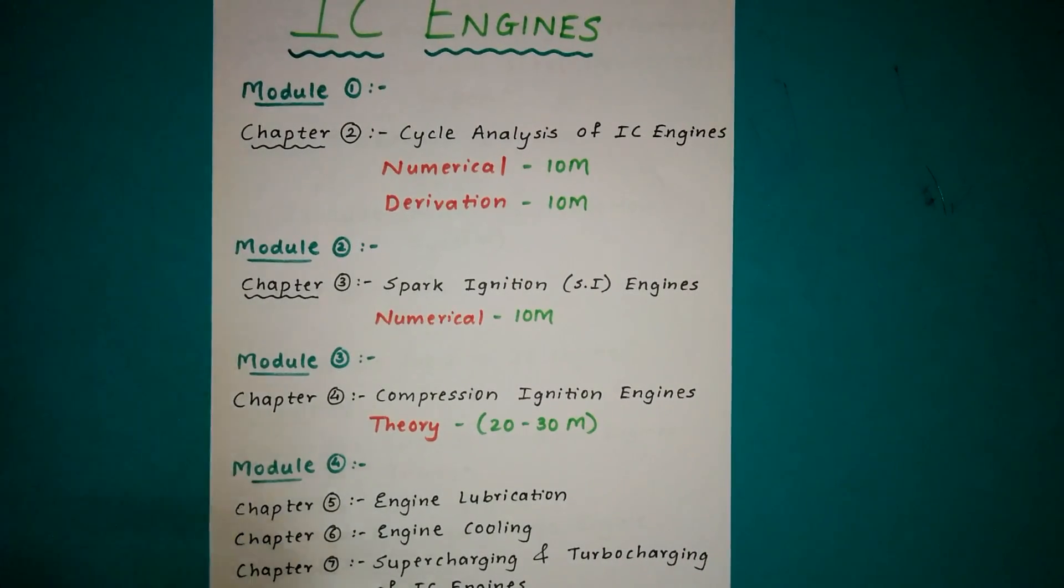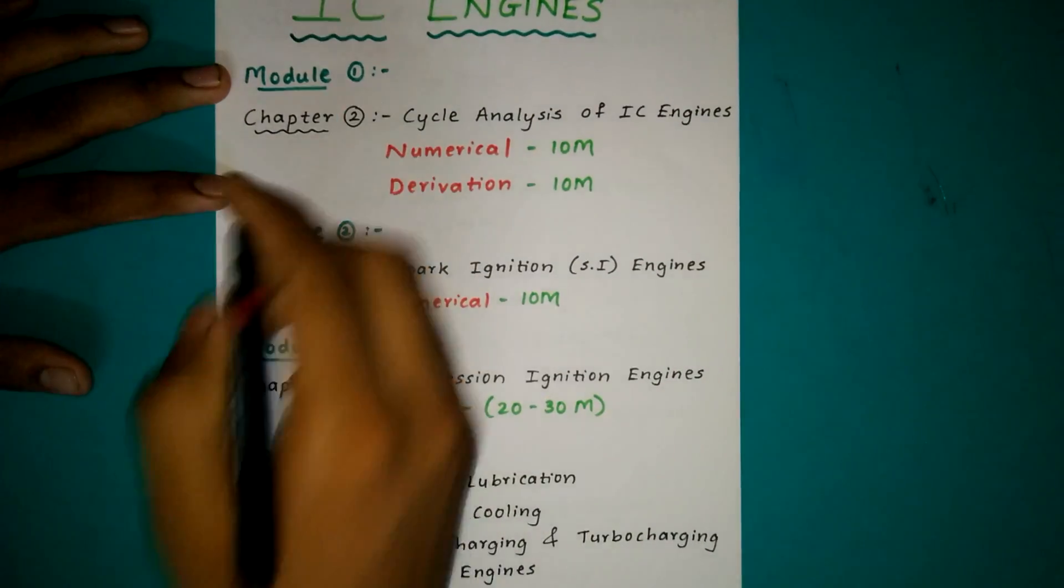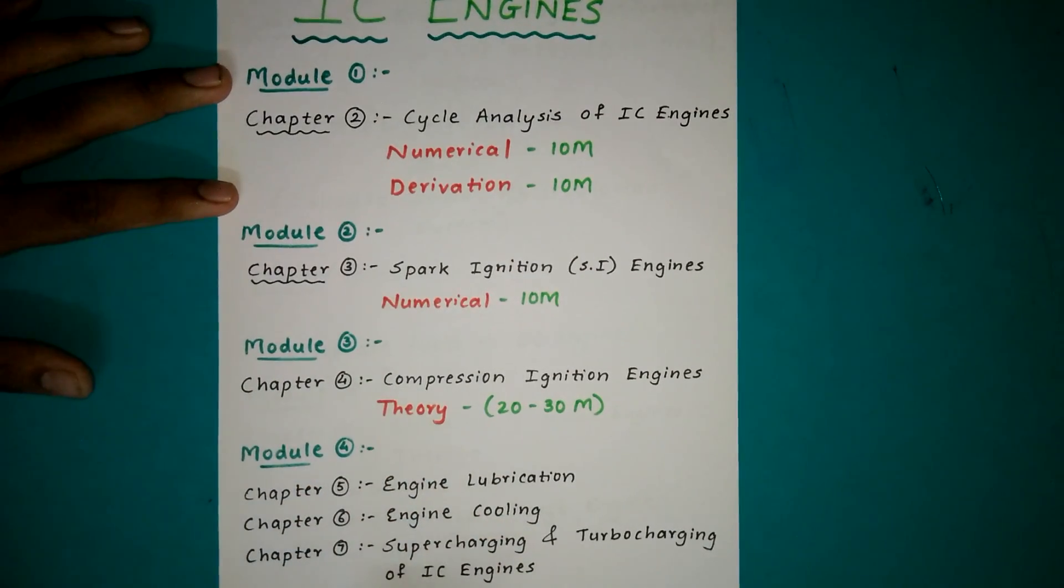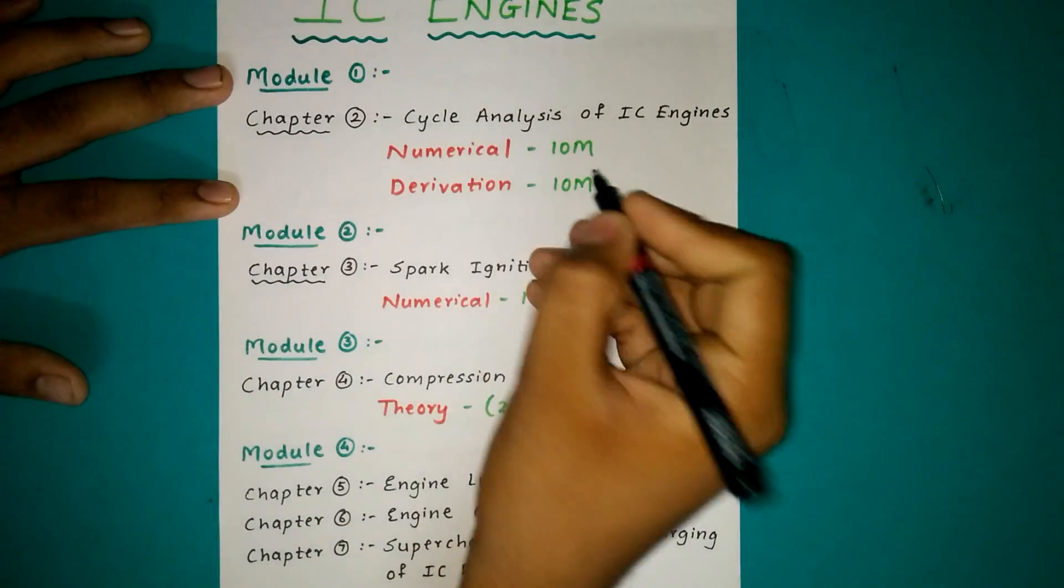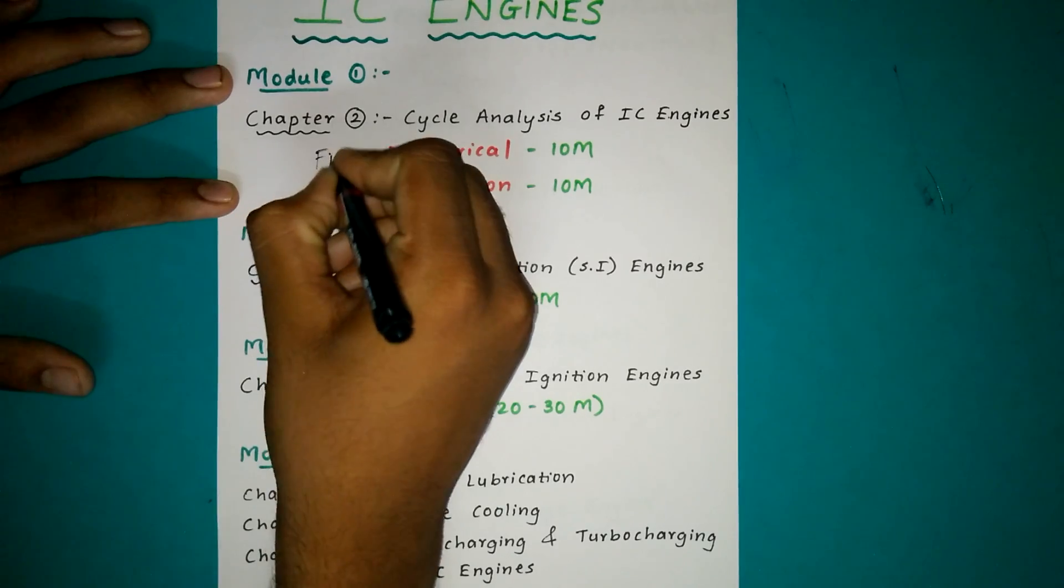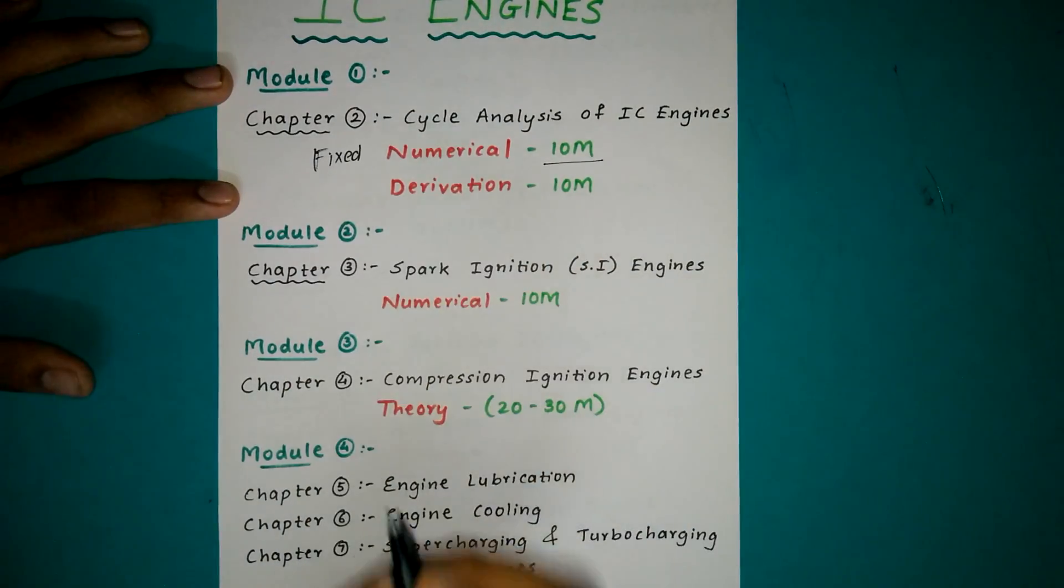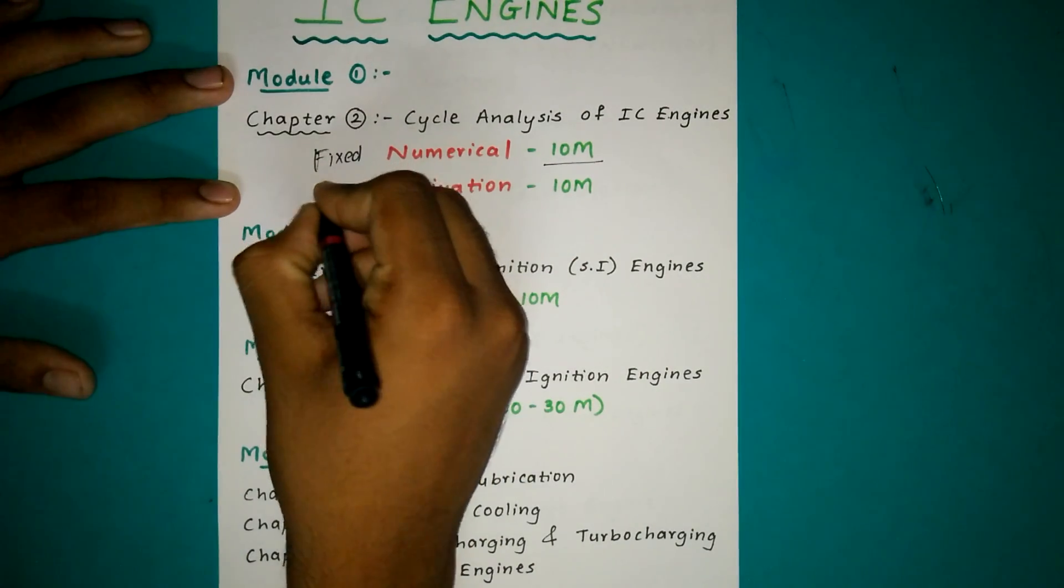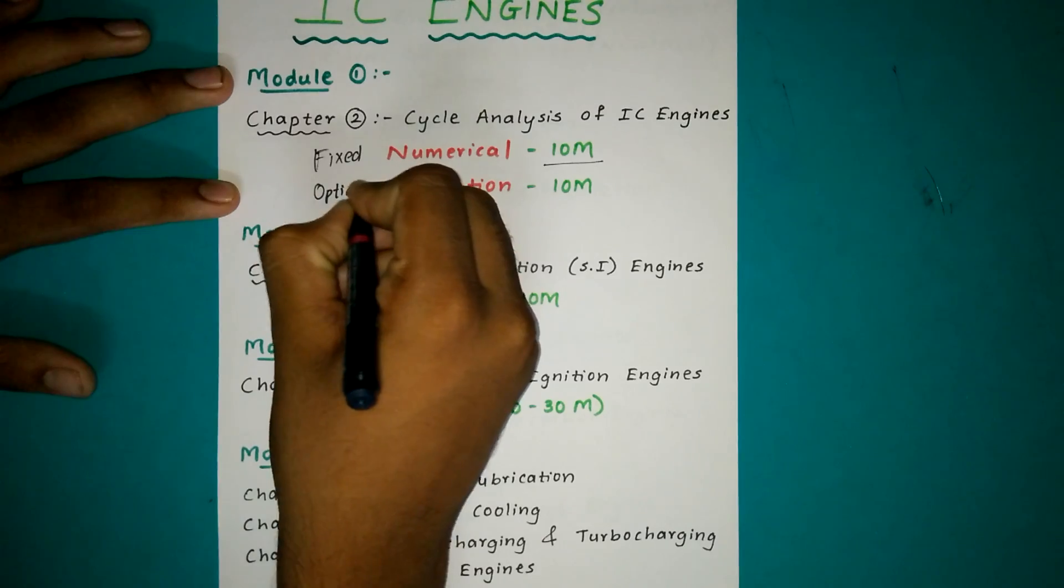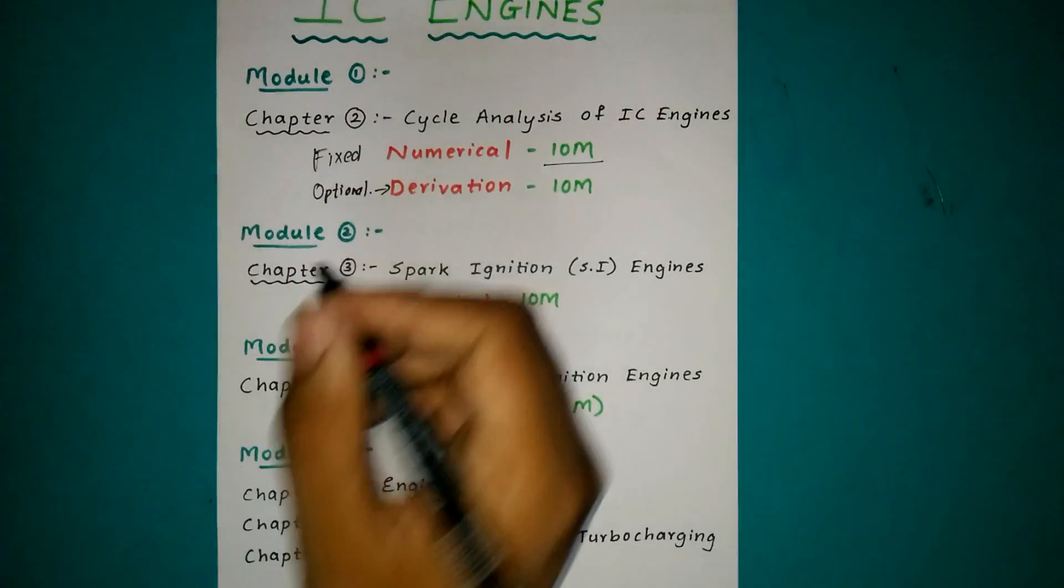If you look at the syllabus properly, Module 1 has Chapter 2: Cycle Analysis of IC Engine. From this chapter there is a numerical that is fixed in the paper for 10 marks. There is a derivation which is not every time asked, it is sometimes optional. But the numerical is fixed, you should attempt it.